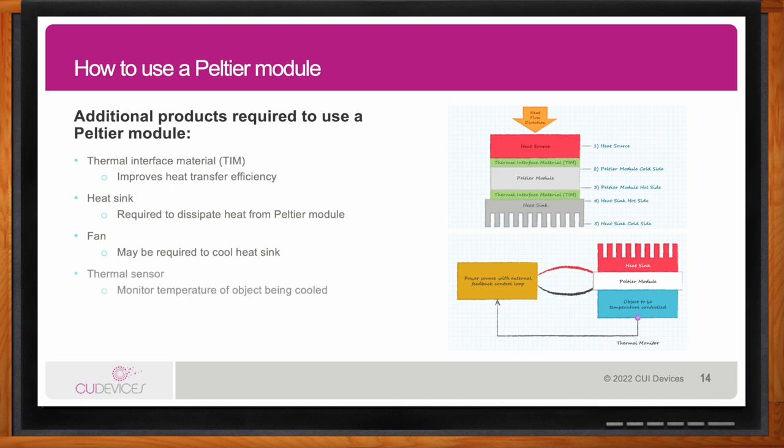You may also see Peltiers used with a DC fan in addition to a heat sink, where the fan blows air onto the heat sink to help dissipate heat faster. It's also good practice to have some type of thermal interface material to make a clean bond between the Peltier and the heat sink and reduce potential air pockets. Other useful design elements include a thermal sensor to monitor the temperature of the object being cooled and a power supply to power the Peltier module.